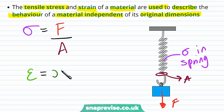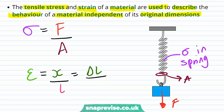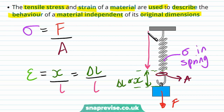Strain is the ratio of the extension x divided by the natural length L of the material. We can also write the extension as delta L — the small change in L — divided by L. If the spring was originally a certain length and now has an extension x or delta L, then its natural length is the original length before the force was applied. These properties are independent of the material's original dimensions, making them more useful than force and extension.